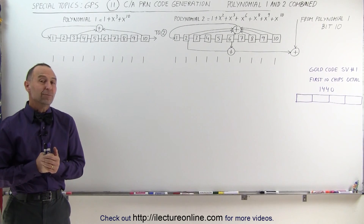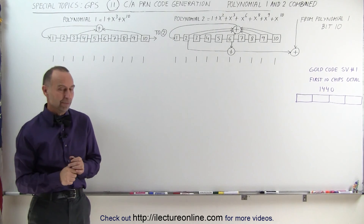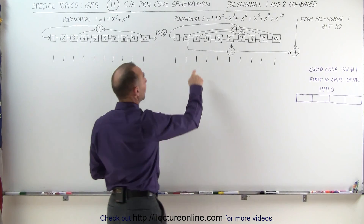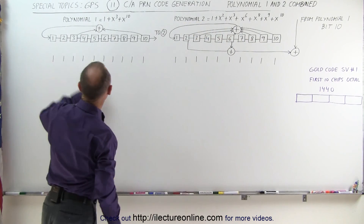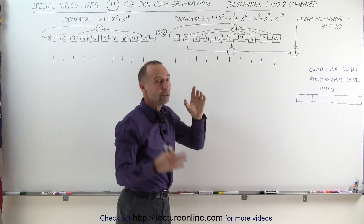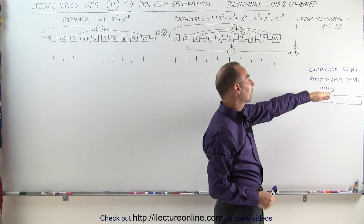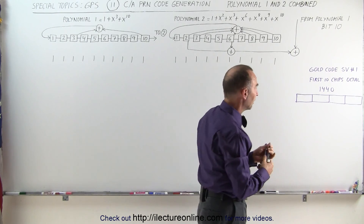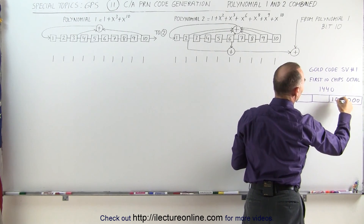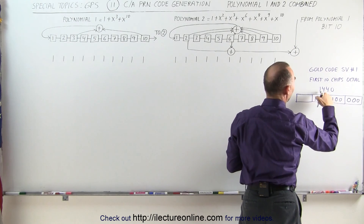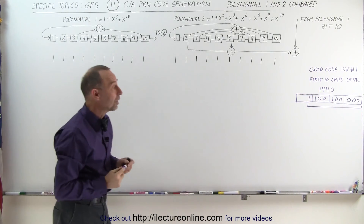Welcome to ElectronLine. We'll set up an example that gives us the first 10 chips of the PRN code for Space Vehicle 1. For Space Vehicle 1, we're going to combine and sum up bit position 2 and bit position 6 from polynomial number 2. I've listed the equations for polynomial 1 and polynomial 2 combined, which will produce the gold code. Here are the first 4 characters of the 10 chips we need for that code in octal. The 0 gives us 3 zeros, the 4 gives us a 1 and 2 zeros, the next 4 gives us a 1 and 2 zeros, and the 1 gives us a 1. This becomes the first 10 chips of that code, for a total of 1,023 chips every 1 millisecond.